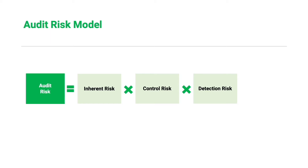To manage the overall audit risk, since we cannot control inherent risk or control risk, we must adjust the acceptable detection risk in our engagement. Expressed in equation form: Audit Risk = Inherent Risk × Control Risk × Detection Risk. Our goal is to reduce the overall audit risk to an acceptable level, also referred to as the desired level of audit risk, by first assessing the levels of each component of the audit risk model.